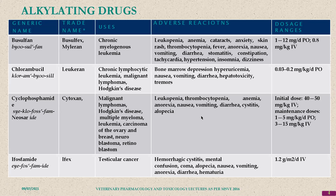Most antineoplastic drugs arrest the growth of fast-growing cells. The fast-growing cells in the body are blood cells, hair follicle cells, and stomach and intestinal proliferating cells.